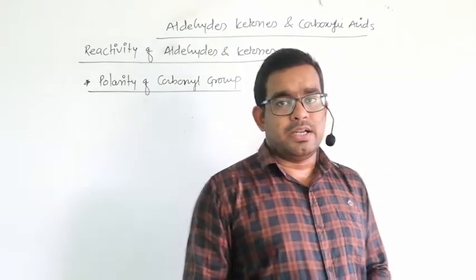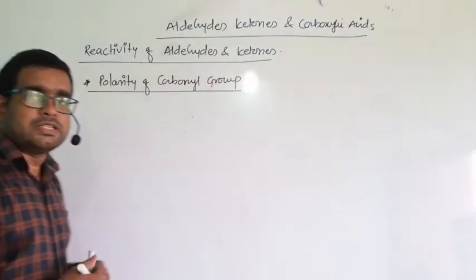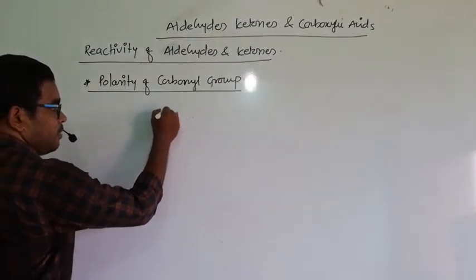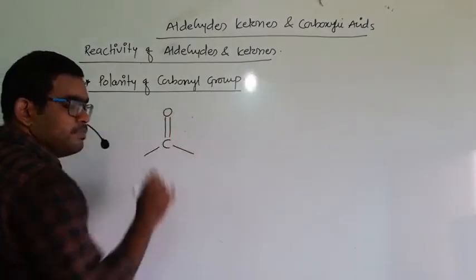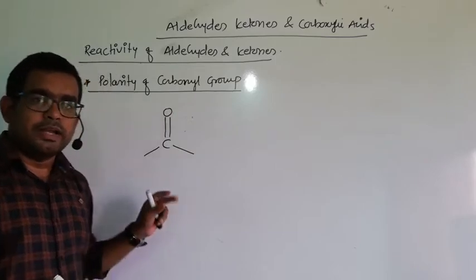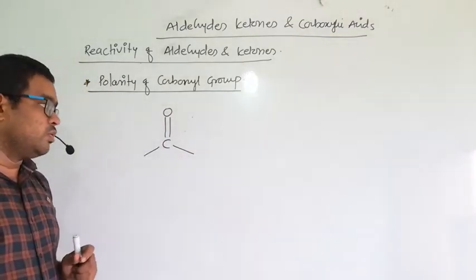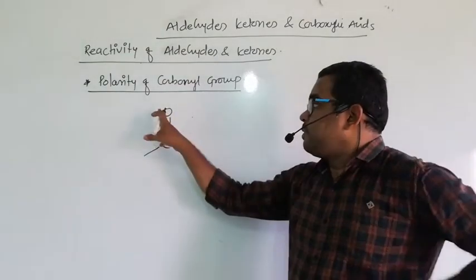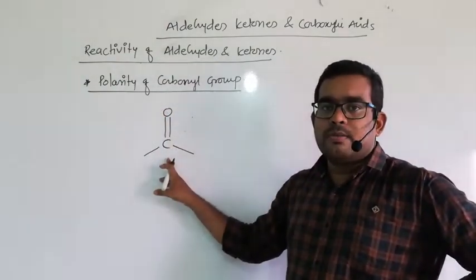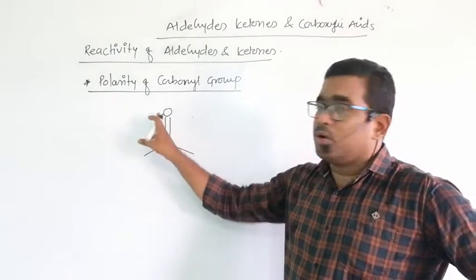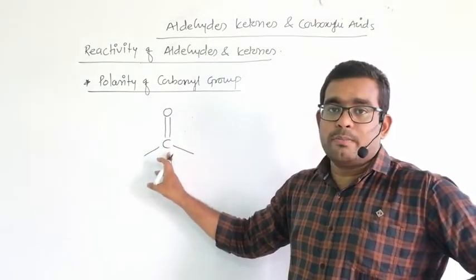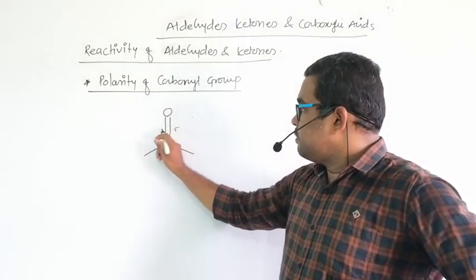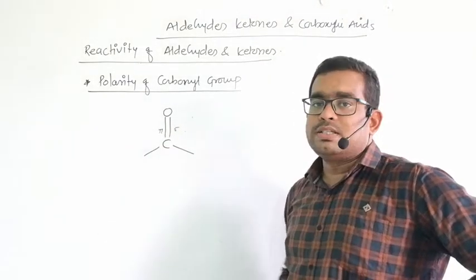Now let's see how the carbonyl group is polar in nature. Take the example of a carbonyl group — C double bond O. Here, oxygen is more electronegative compared to carbon. Out of the two bonds, one is sigma and another is pi. In this case, the pi electron density is shifted towards the oxygen.